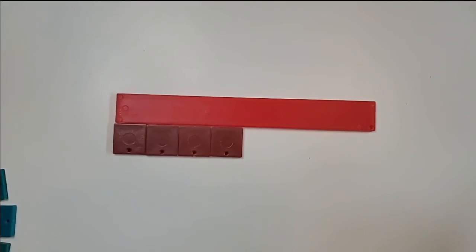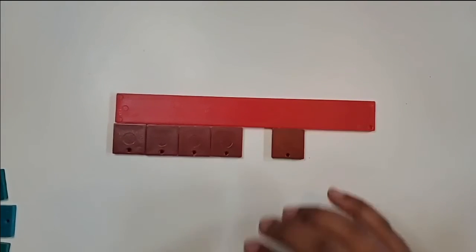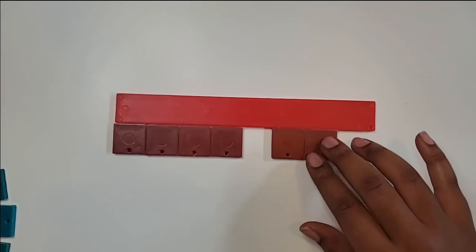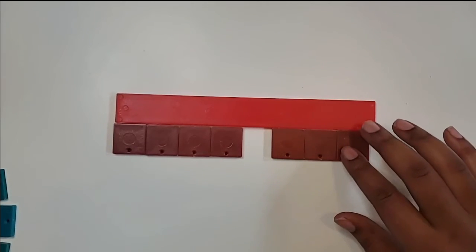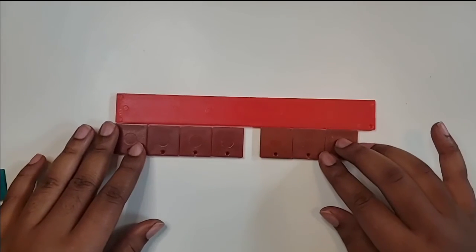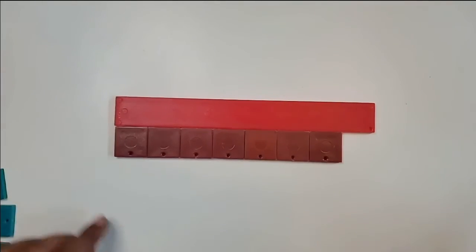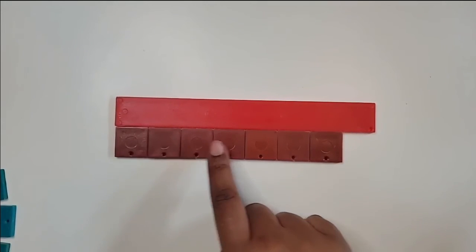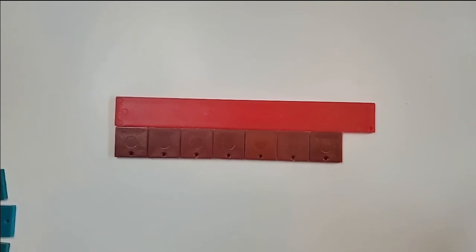So we want to add 4/8 and 3/8. Combine the two fractions. 4/8 and 3/8 equals 1, 2, 3, 4, 5, 6, 7.